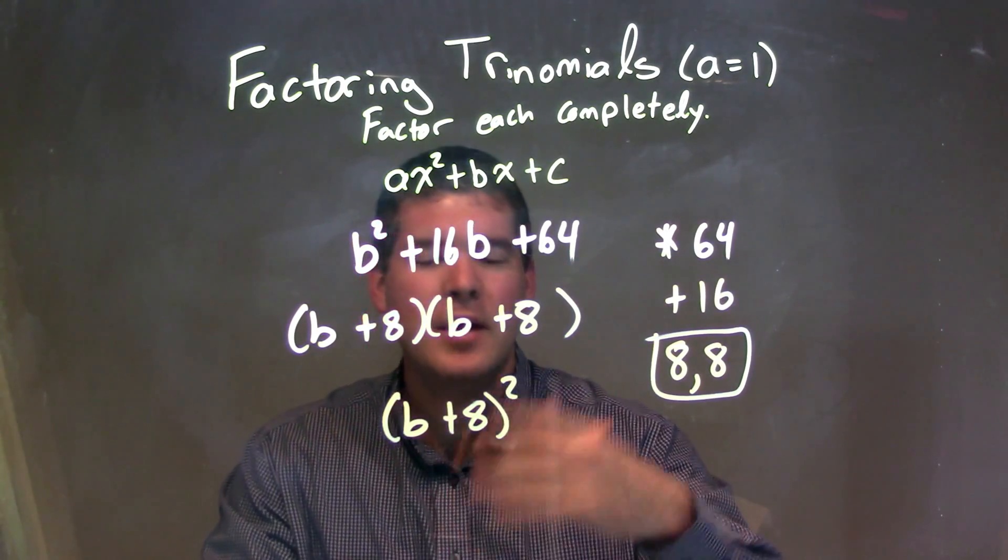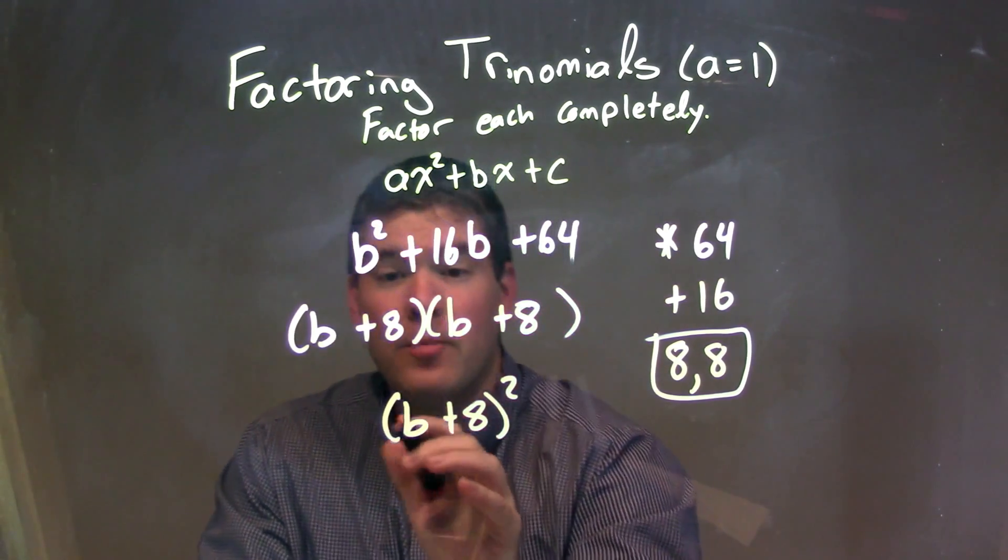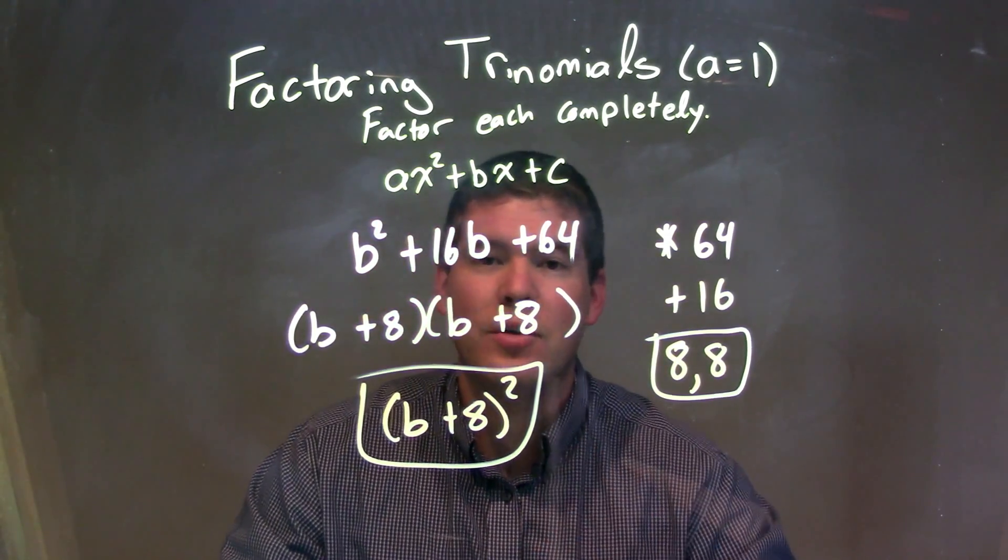The same thing times itself, same thing multiplied by itself, is that thing squared. So our final answer here is just b plus 8 all squared.